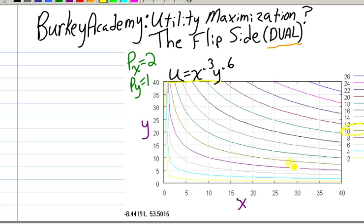So the flip side, the dual problem, so utility maximization, sometimes we call cost minimization. The goal, get ten utils. So how do we solve this kind of problem?